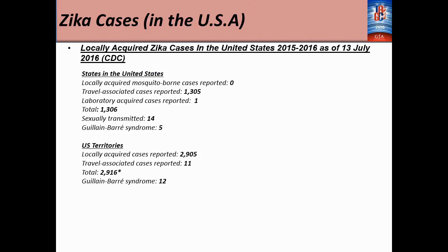This gives an overview of Zika cases in the States. The locally acquired mosquito-borne cases reported is zero, meaning that Zika might not, at least as of today, be endemic in the States. The travel-associated cases are reported as 1,305, and the laboratory-acquired cases reported is one — because sometimes scientists testing in the lab could accidentally get infected. Sexually transmitted cases: 14. Guillain-Barré syndrome cases: 5. The U.S. territories have almost 3,000 locally acquired cases, and the travel-associated cases reported there is 11.